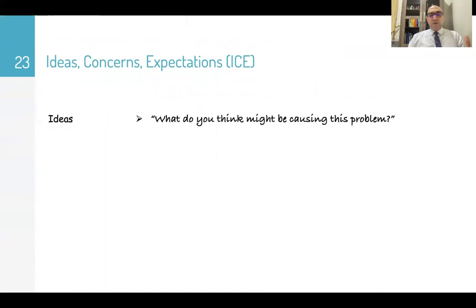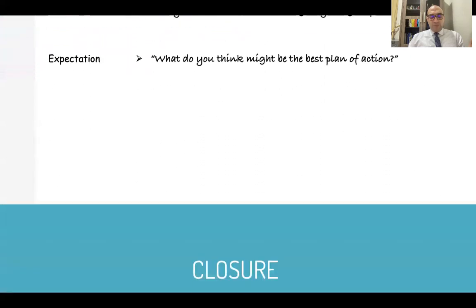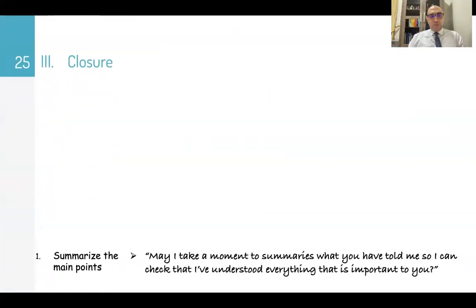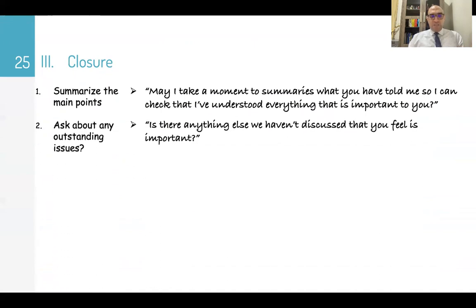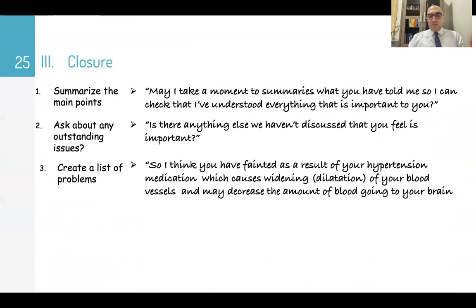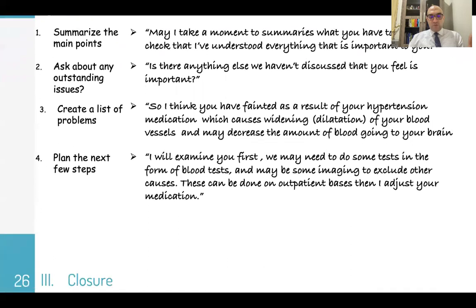Ideas, concerns, and expectations: What do you think might be causing this problem? Are you worried about this being anything in particular? What do you think might be the best plan of action? At the end of the session, go for closure — summarize the main points: 'May I take a moment to summarize what you have told me, so I can check I have understood everything important to you?' Ask if there are outstanding issues. Then explain: 'I think you have fainted as a result of your hypertension medication, which causes dilatation of your blood vessels and may decrease blood flow to your brain. I will examine you first, and we may need blood tests and imaging to exclude other causes, which can be done on an outpatient basis, and I will adjust your medication.'